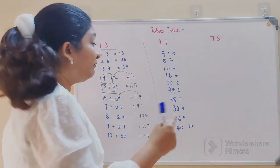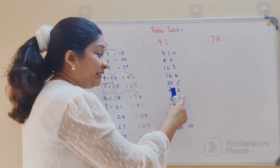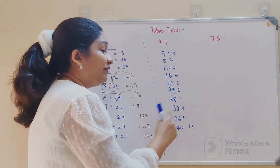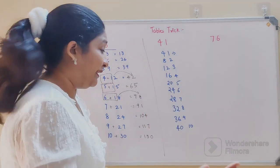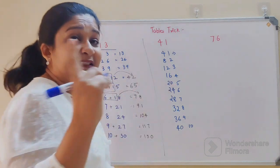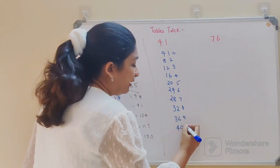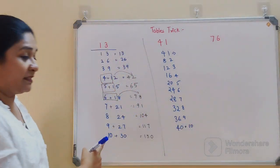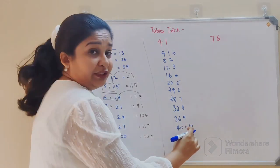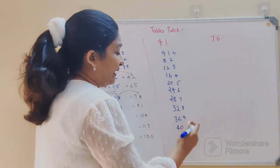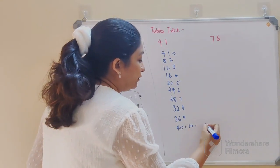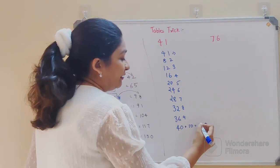Now here, like I said, we will follow the same principle because we have two digits in your unit place. So what you will write down, we will continue the 0 as it is, and 40 plus 1 gets you 41.